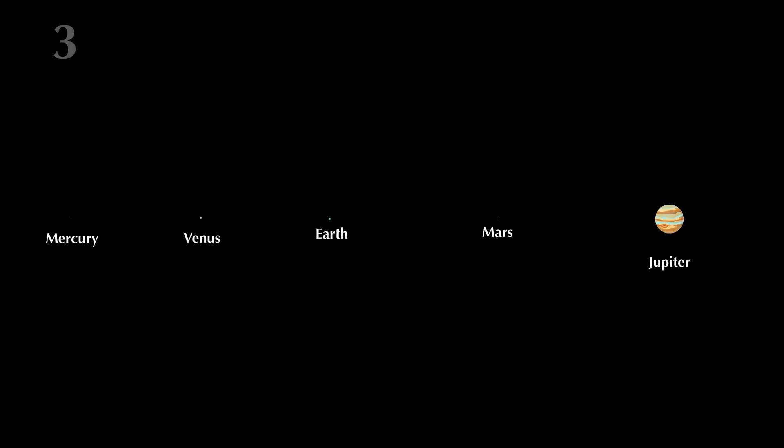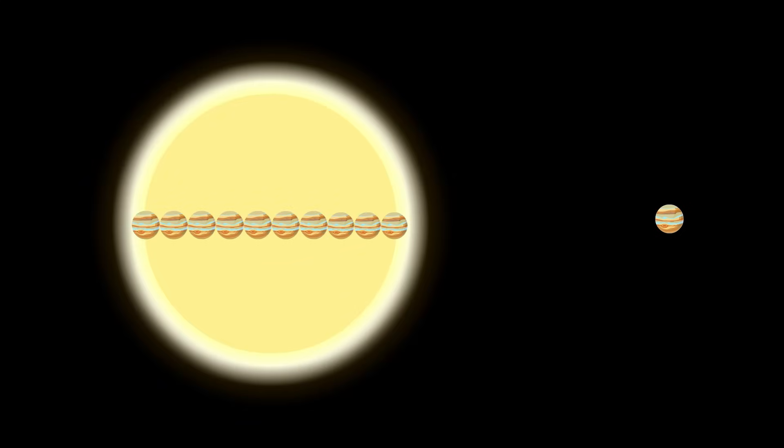Jupiter is significantly larger than all the inner planets, but the sun is still about 10 times larger than Jupiter, the fifth planet from the sun.